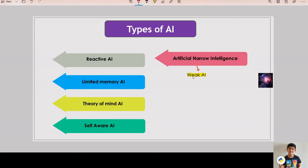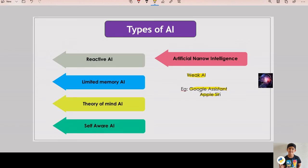These machines can do nothing more than what they are programmed to do, and thus they have very limited or narrow range of competencies. Examples are Apple Siri, Google Assistant, etc.